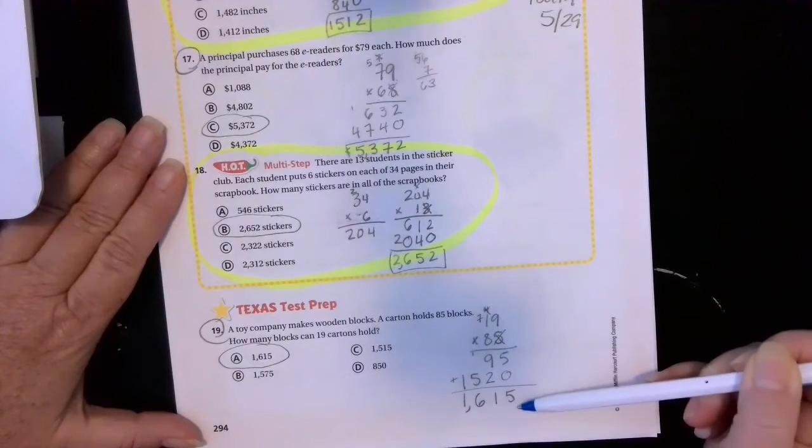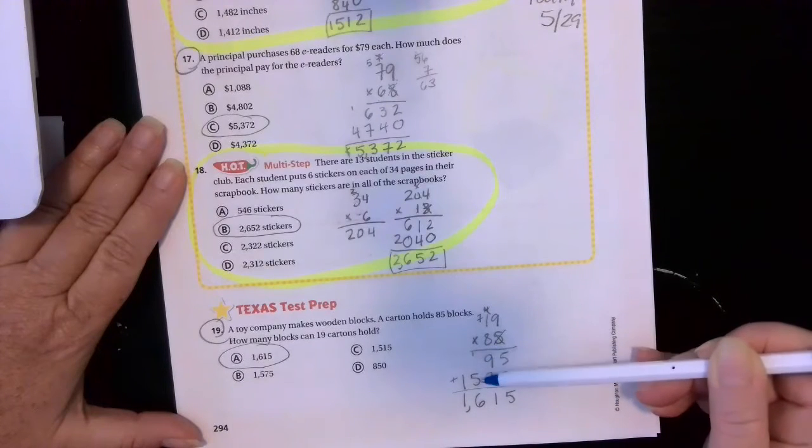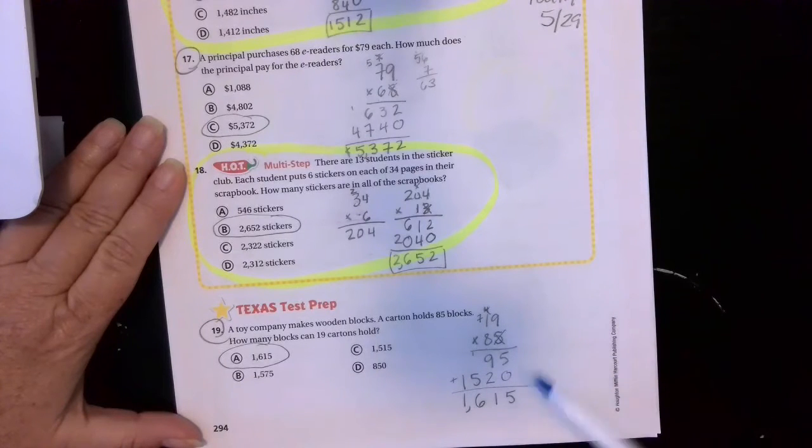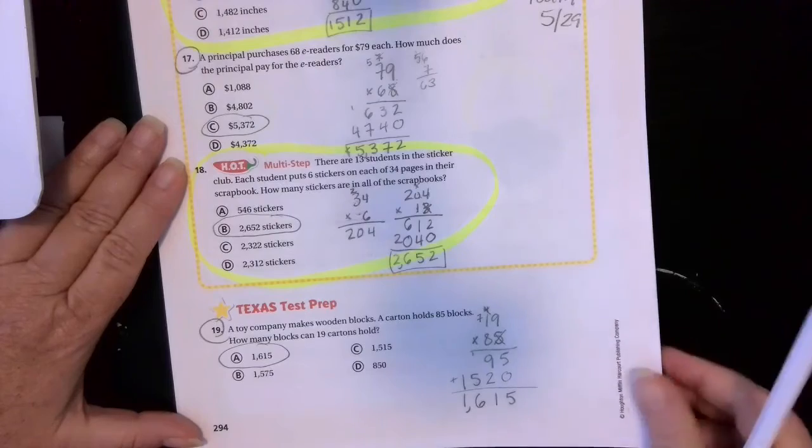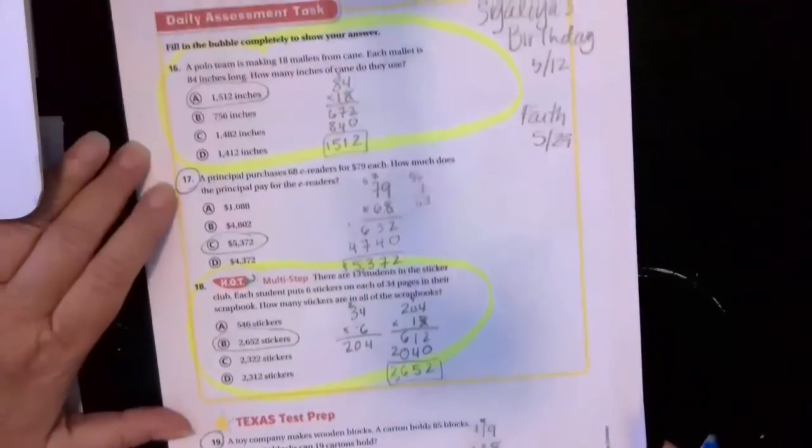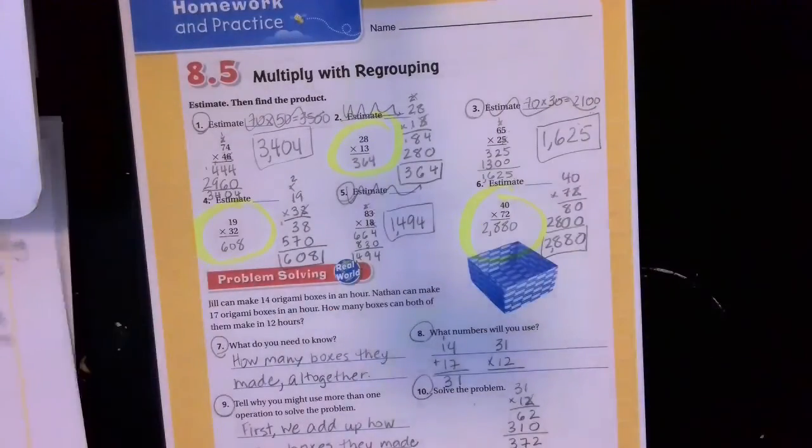8 times 9 is 72. Put down my 2, carry my 7. 8 times 1 is 8, plus 7 is 15. Added them together. 5 plus 0 is 5. 9 plus 2 is 11. Put down my 1, carry my 1. 1 plus 5 is 6. And then nothing plus 1 is 1. So 1,615 wooden blocks. That's how many they can hold in the 19 cartons.